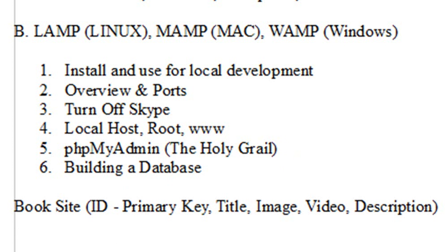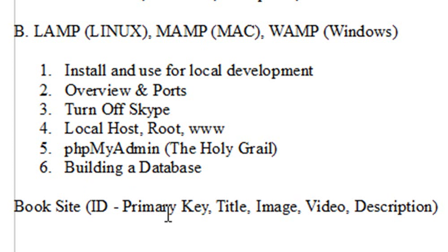What I want to talk about is a potential site for my book. I want people to click on an image and have it pop up with a video and some description of what's in that chapter. So the first thing I need is a primary key to identify all the items in my database. Then I need a title, an image, a video, and a description. That will be my database.